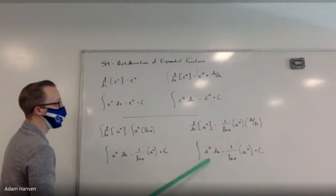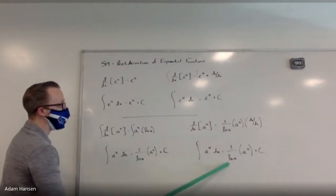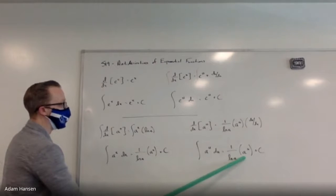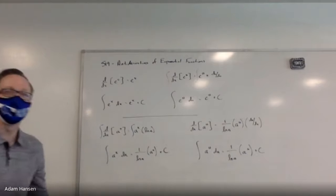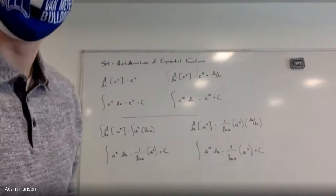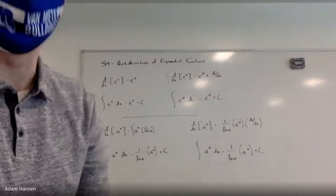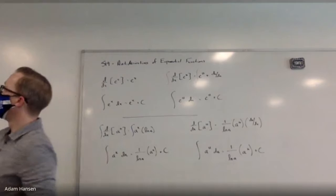Taking the anti-derivative of that gives the formula: the anti-derivative of a to the u du equals one over the natural log of a times a to the u plus C. That should be the formula on your formula sheet.